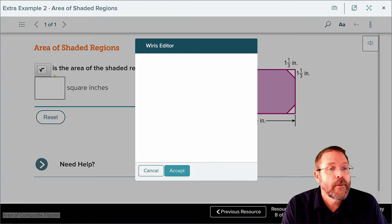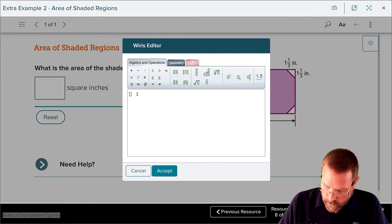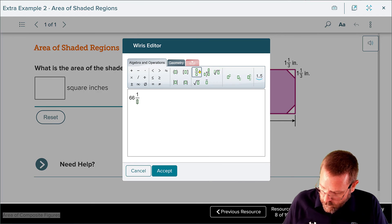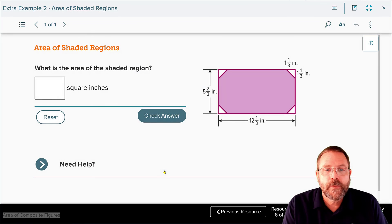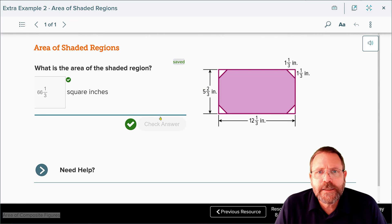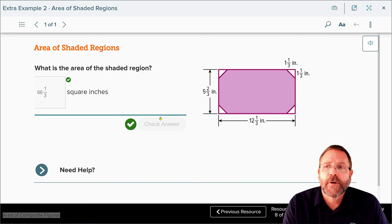Jump back over here, type it in as a mixed number: 66, fraction, 1 over 3. And accept and check. We get a happy sound. That is going to be it for this lesson. Get started on your homework. Bring any questions you have to class tomorrow.